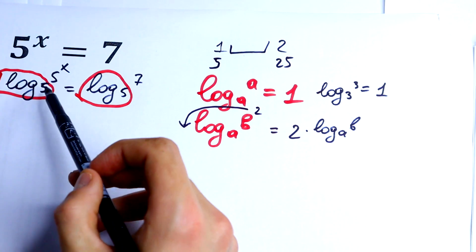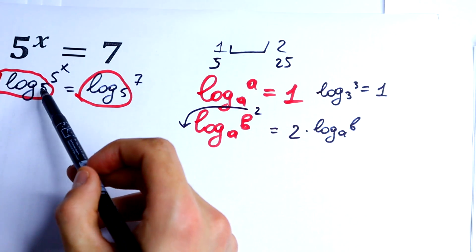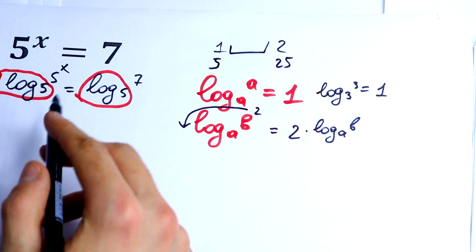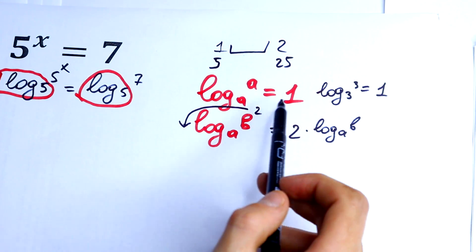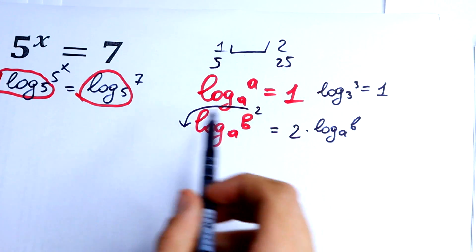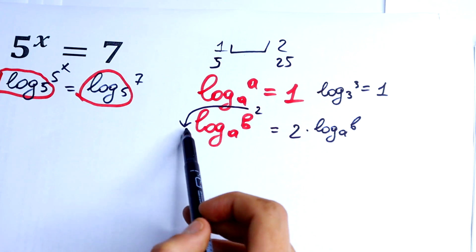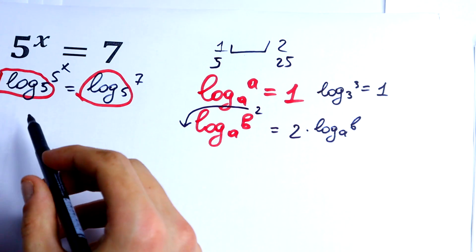We know that log base 5 of 5 equals 1. But we have x in an exponent, so we can write this x in the front of the log.